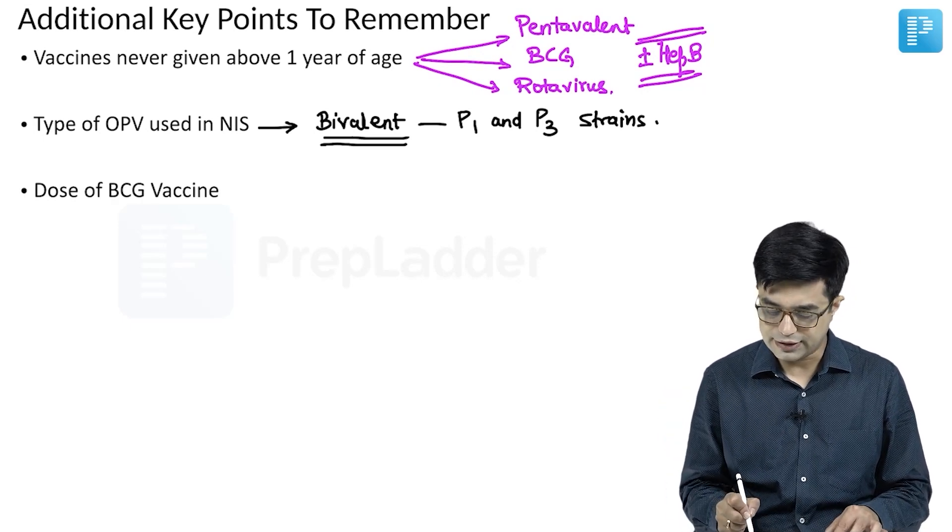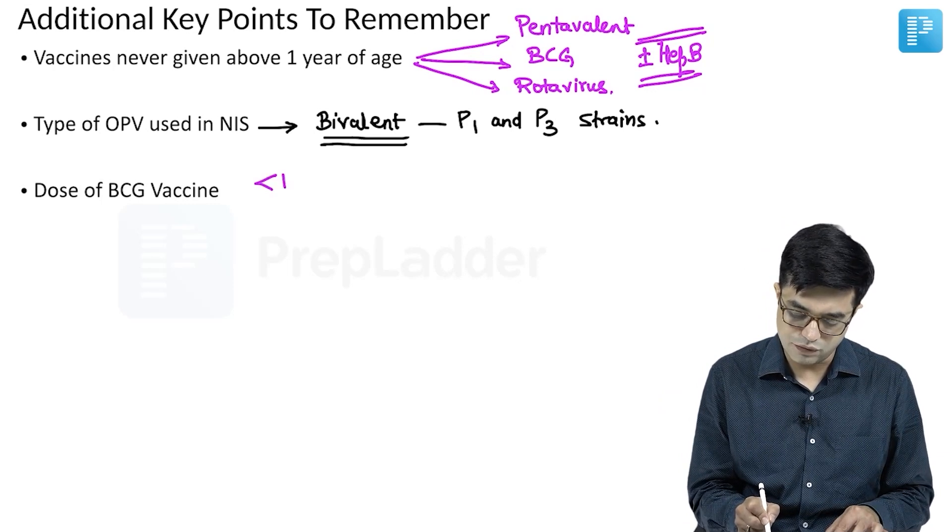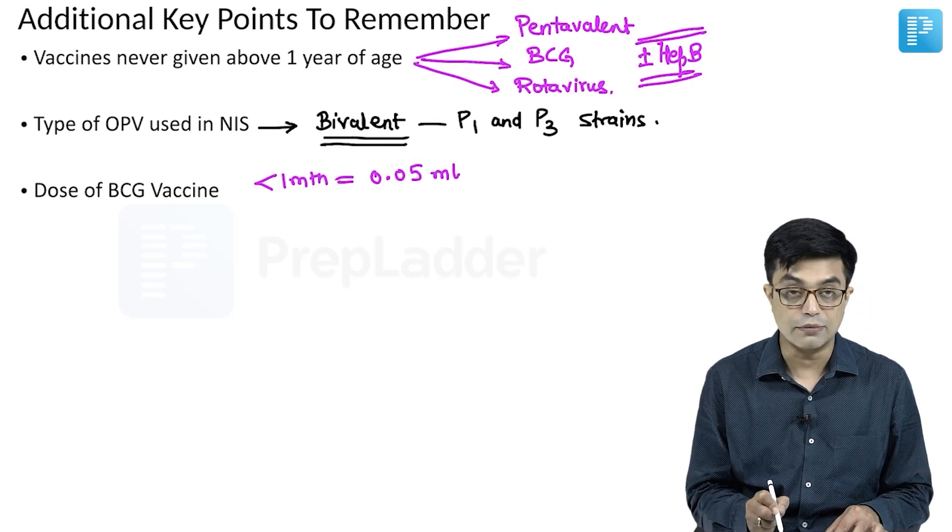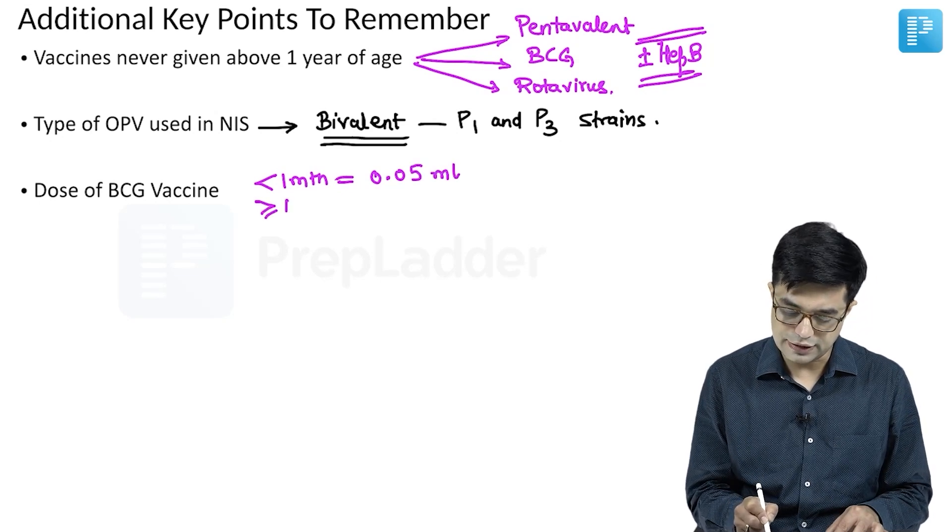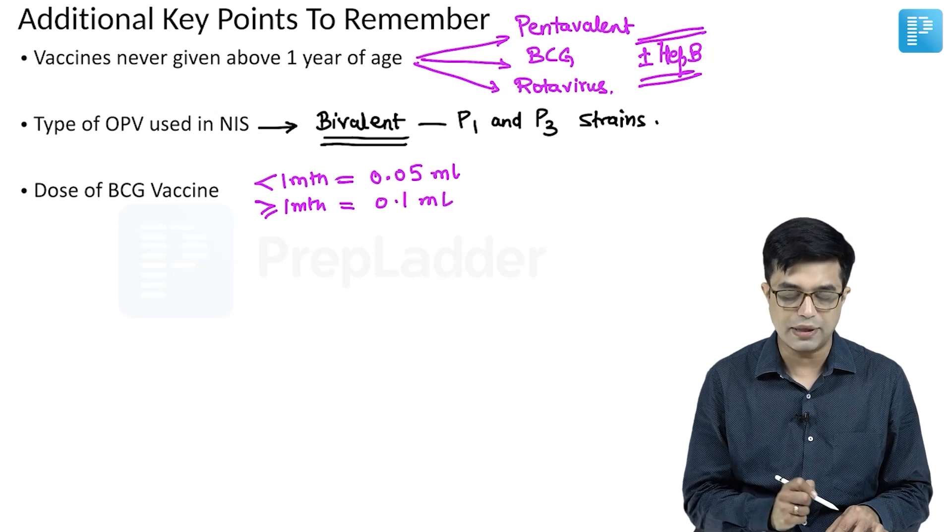What is the dose of BCG vaccine? If the age of the child is less than one month, the dose will be 0.05 ml intradermally. If the age of the child is at or above one month of age, the dose will be 0.1 ml.